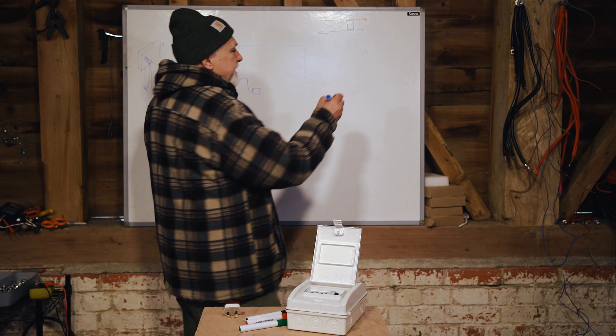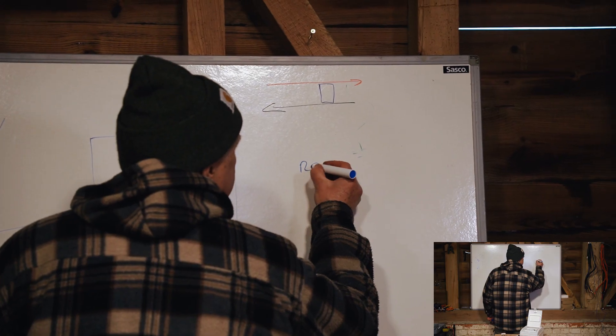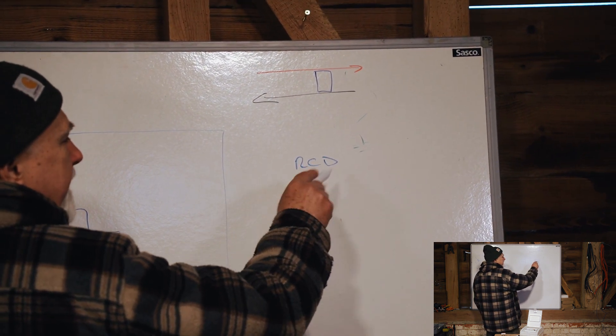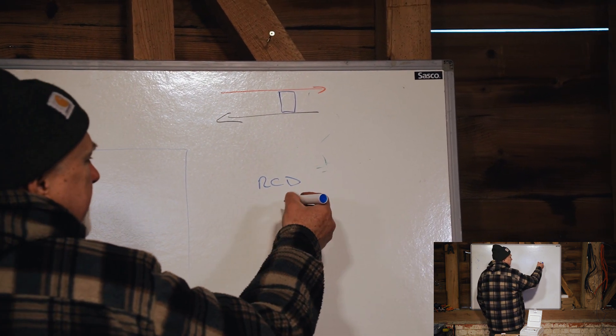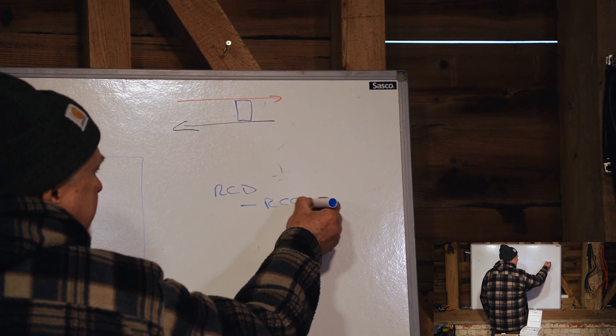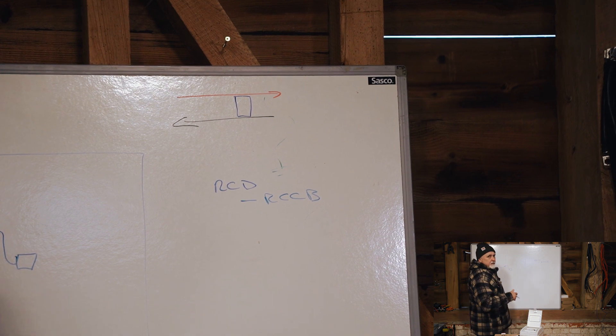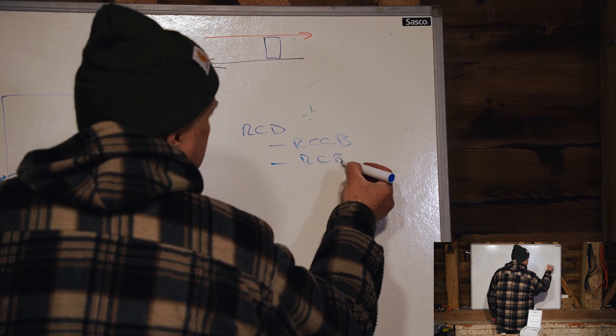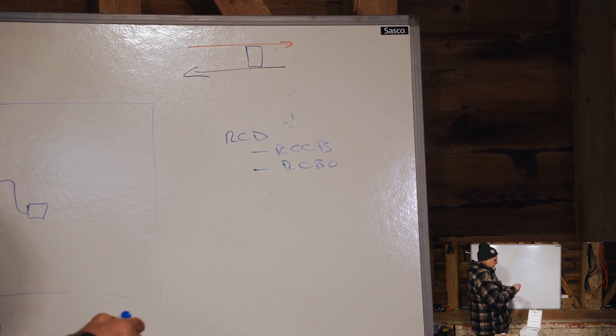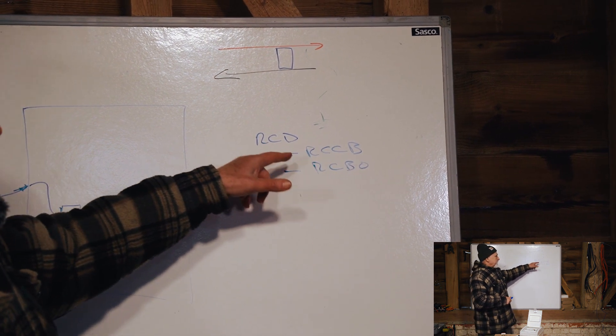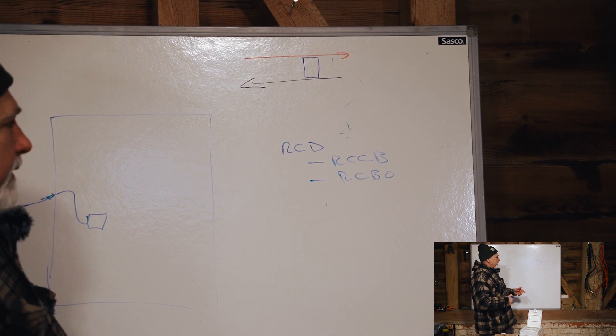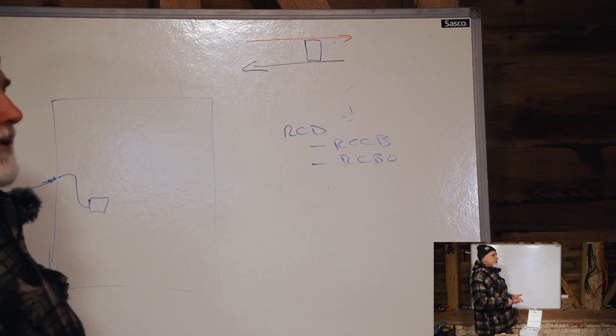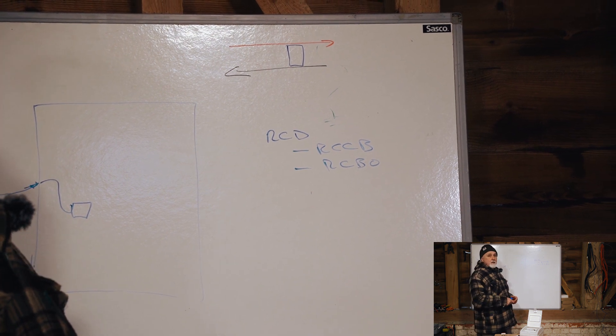And there are essentially, so when we say RCD, we're talking about the family of residual current devices. So it's a family of devices. This is also sometimes known as the RCCB. And this is the most common that we have installed everywhere. But you can have what is called an RCBO. And the difference between these two is that this only protects a leakage to earth, protects from a leakage to earth. And this one protects from a leakage to earth as well as overcurrent and dead shorts and things like that.